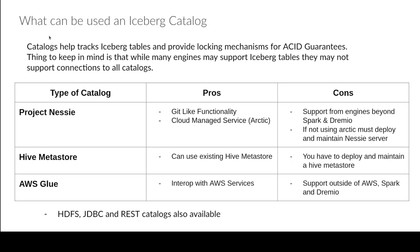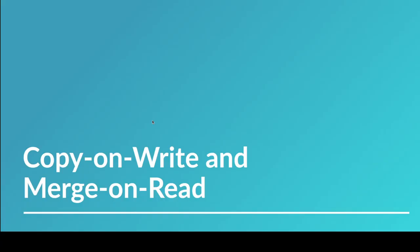That wraps up this video. In the next one we're going to talk about the difference between copy-on-write and merge-on-read when you're trying to fine-tune row-level operations. I'll see you guys there.